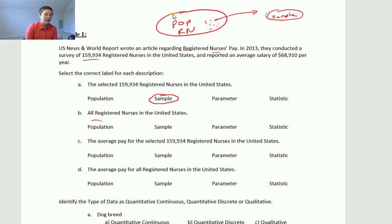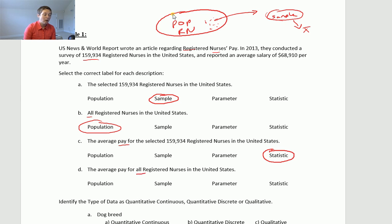All RNs in the United States — that's the population. When it's all of them, that's the entire population. The average pay for the selected 159,934 RNs is the average for the sample. Remember, from the sample you get a statistic. S goes with S: sample, statistic. And the average pay for all RNs in the United States — P goes with P: population, parameter. The average from the population is the parameter.